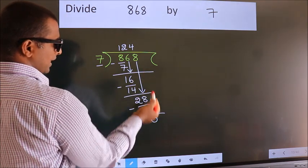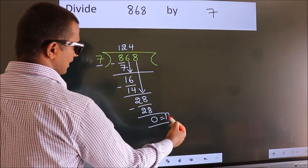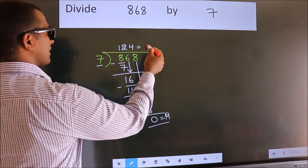No more numbers to bring down. So we stop here. This is our remainder. This is our quotient.